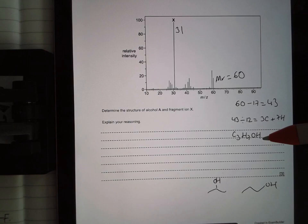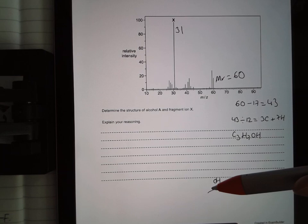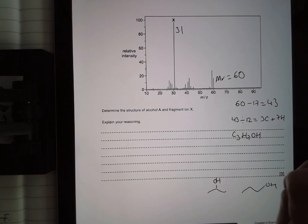So there are two isomers of C3H7OH. I can draw it as just propan-1-ol, with the OH on carbon 1, or I can draw it as propan-2-ol, with the OH on carbon number 2. To figure out which one is which, I need to analyze my peak X. Peak X is at 31. In order for it to be at 31, I need to see what fragment could be giving me a peak at 31.